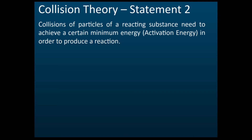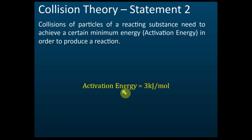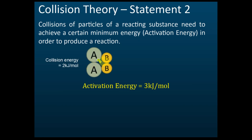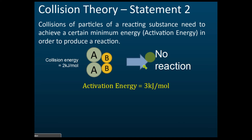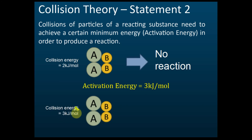For example, for the reaction between A and B, let's say the activation energy is 3 kilojoules per mole — that is the minimum energy needed for the reaction to occur. If A collides with B but the collision energy is only 2 kilojoules per mole, which is lower than 3 kilojoules, then no reaction occurs. But if they collide and the collision energy is 3 kilojoules per mole, equal to the activation energy, then a reaction can occur.